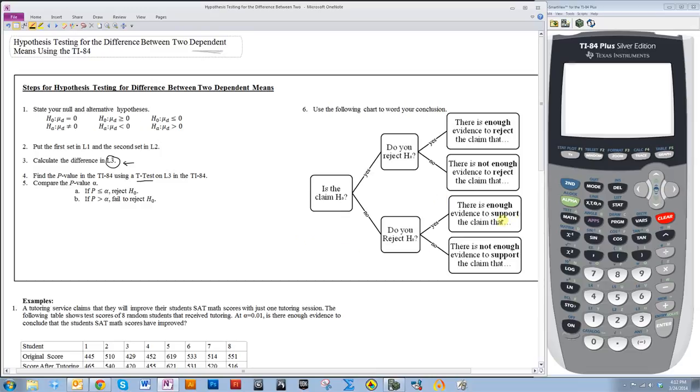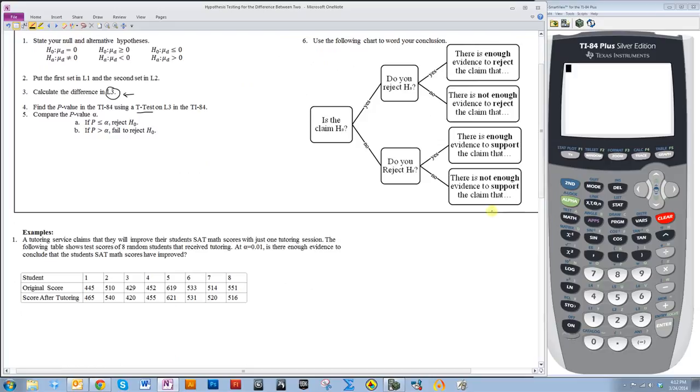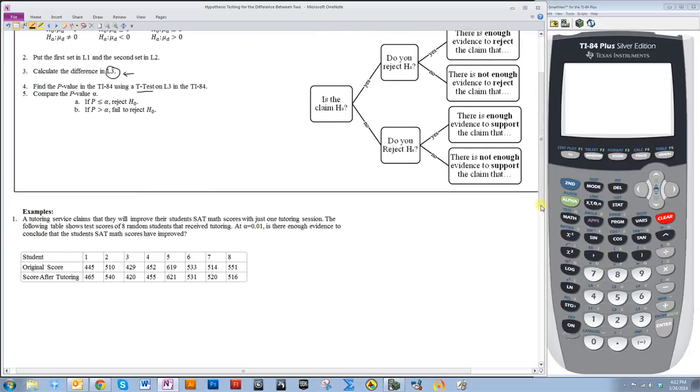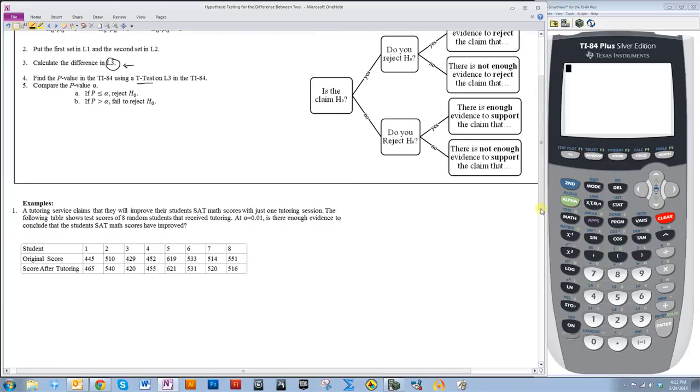Let's look at an example. A tutoring service claims that they will improve their students' SAT math scores with just one tutoring session. The following table shows test scores of eight random students that receive tutoring. At a 1% level of significance, is there enough evidence to conclude that the students' SAT math scores have improved?